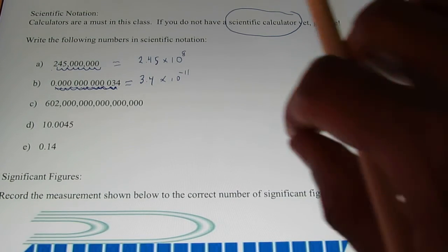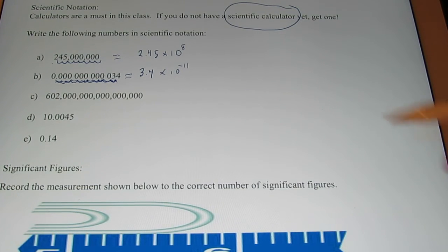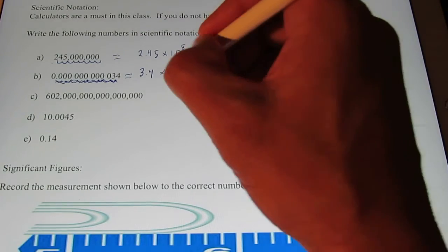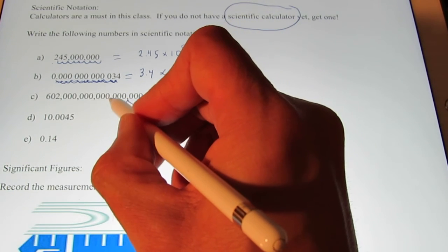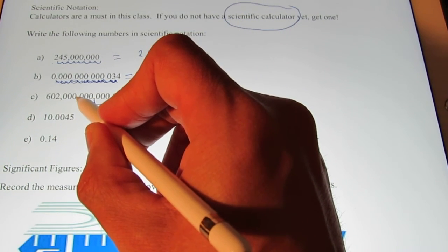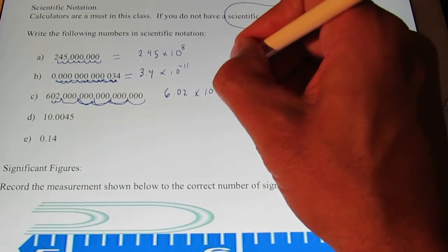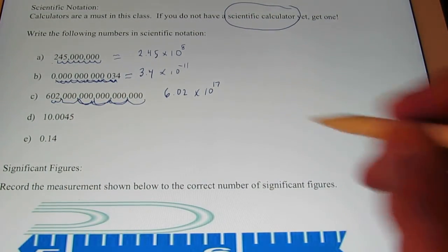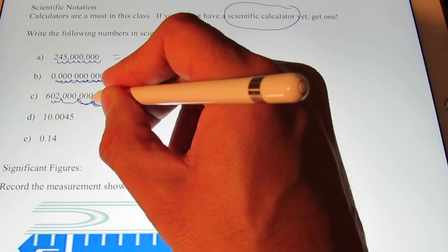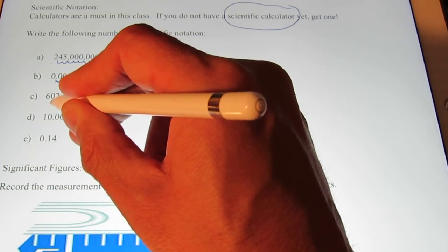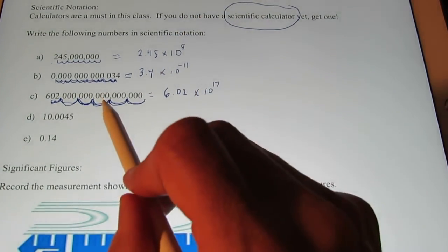Okay, you try the next two. So pause the video. Try the next two on your own. Then I'll do them for you. We'll see how you did. All right, you're back. So for letter C, did you choose 6.02 times 10 to the, let's see, 3, 6, 9, 10, 3, 6, 9, 12, 15, 16, 17. Did you get 6.02 times 10 to the 17th? Let's check because you know I've made mistakes in the past. 3, 6, 9, 12, 15, 16, 17. Yep, I'm pretty sure that's 6.02 times 10 to the 17th. That equals this big old number here.